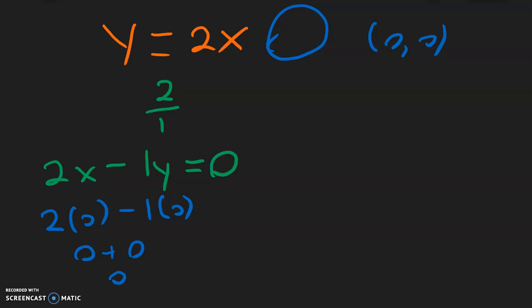So this is equal to 0, and again, we don't need to have a 1 in front of the y, so we can rewrite this as 2x minus y equal to 0, that's the final answer.